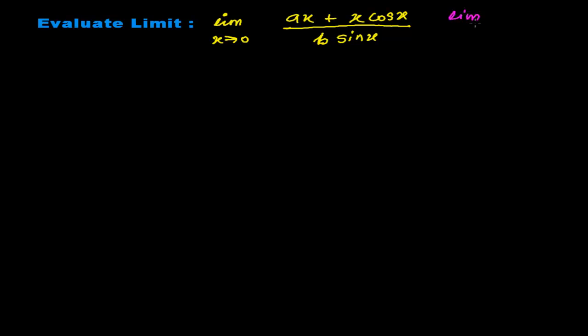For cosine, I'm writing: limit when theta tends to 0, cos of the angle equals 1. And for sine: limit when angle tends to 0, sine of the angle over the angle equals 1. So we need to convert to these standard results.